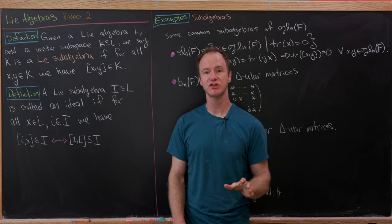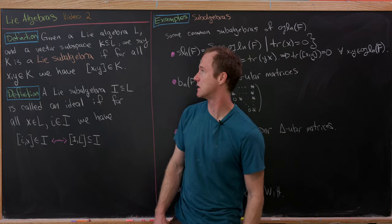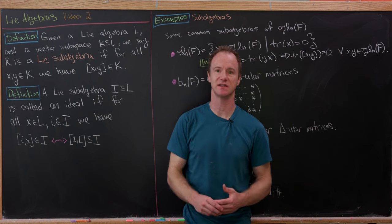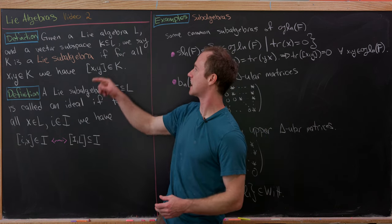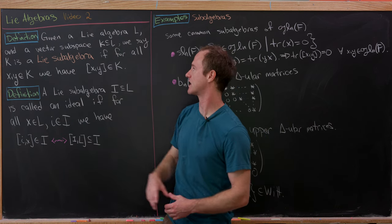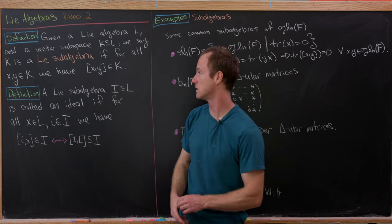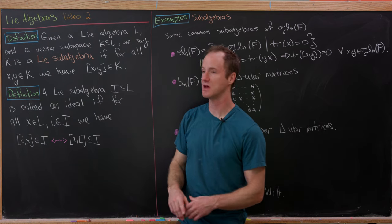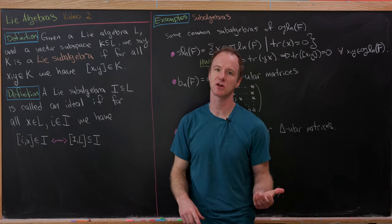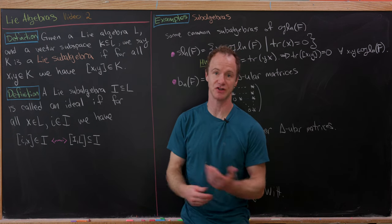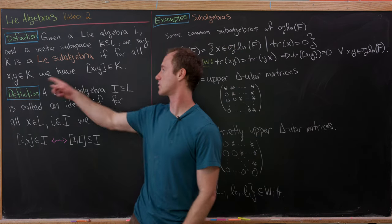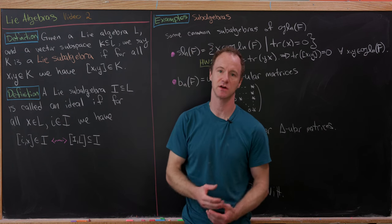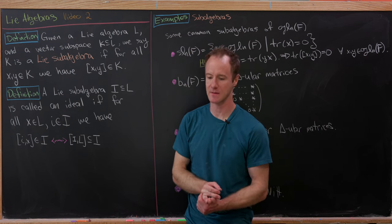So let's start with the definition of a Lie subalgebra. Given a Lie algebra L and a vector subspace K of L, we say that K is a Lie subalgebra if it's closed under the bracket operation. That's all you really need. So in other words, for all x, y in K, the bracket [x, y] is also in K.